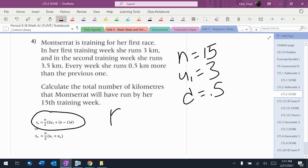So I plug that stuff in. It's going to be 15 over 2, times 2 times 3 plus 15 minus 1 times 0.5. And I'm just going to put that into the calculator.